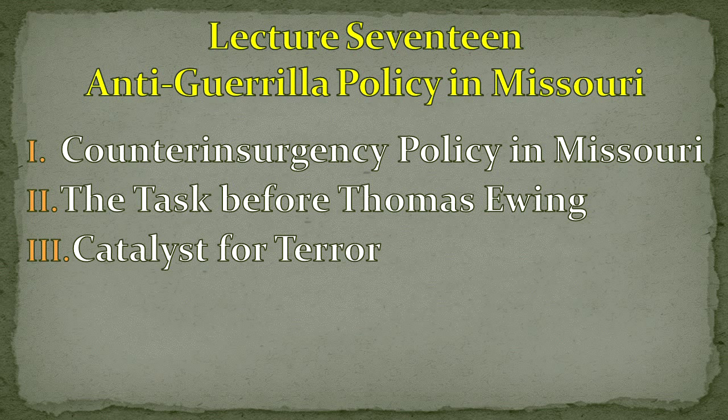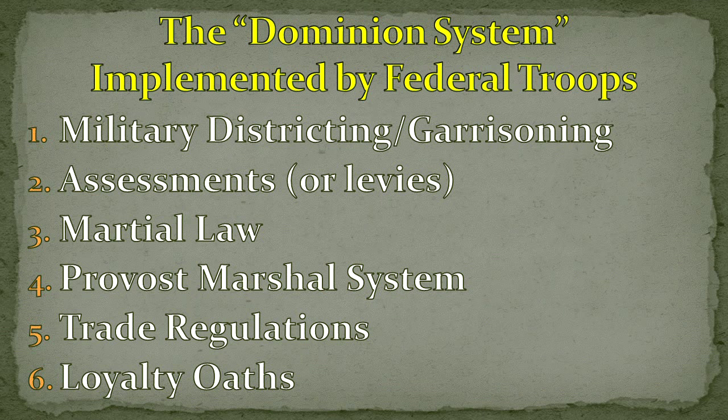At this point, you're familiar with the basic elements of counterinsurgency policy. According to Christopher Phillips, this policy taking shape in 1861 and 1862 resembled a dominion system — an integrated, if imperfectly implemented, net of measures. It was administered by Union commanders as well as by state and federal officials, and carried out by low-level commanders at posts across the state. This system had six parts: military districts and garrisons, assessments and levies, martial law, the provost-marshal system, trade regulations, and lastly, and perhaps most odiously, the oath of allegiance. It's valuable to review these interlocking parts, both to see how much federal officials tried and how ineffectual these measures proved.